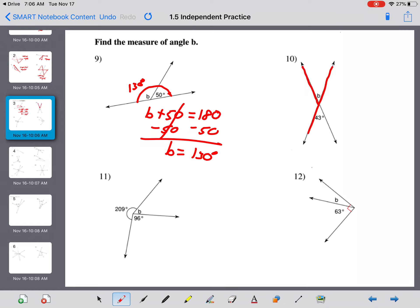Here, you have your bow tie shape. Vertical angles equal each other. So B equals 43 degrees.